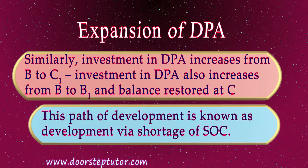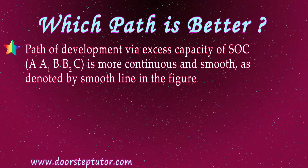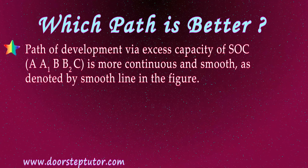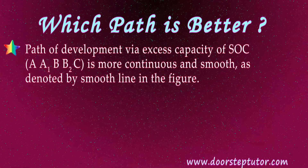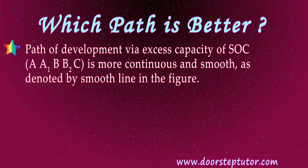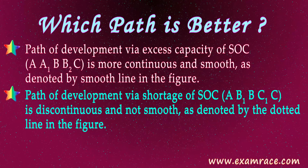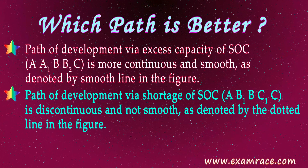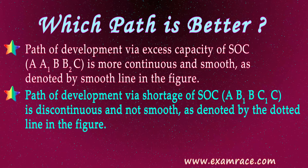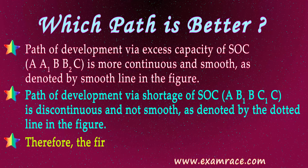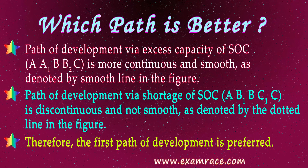This second path of development is called development via shortage of SOC. Comparing the two paths, the first route — via excess capacity of SOC — is more smooth and continuous than the second path. The route via shortage of SOC is discontinuous and difficult because investment in DPA might not induce a corresponding increase in SOC.